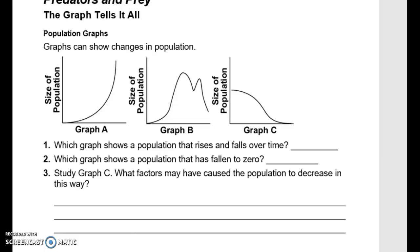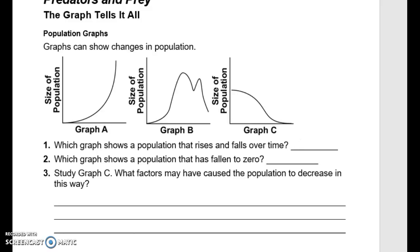Would that be graph A, where the graph just goes up; graph B, where it goes up and down; or graph C, where it starts off high and goes down? Which graph shows a population that rises and falls? That would be graph B. Which graph shows a population that has fallen to zero? That would be graph C.